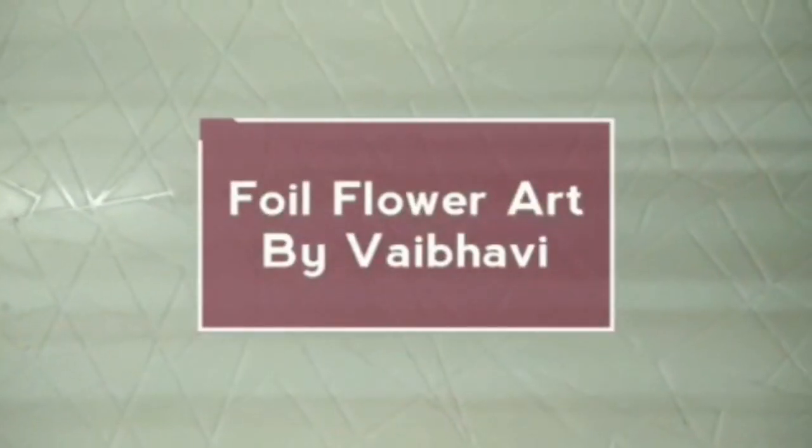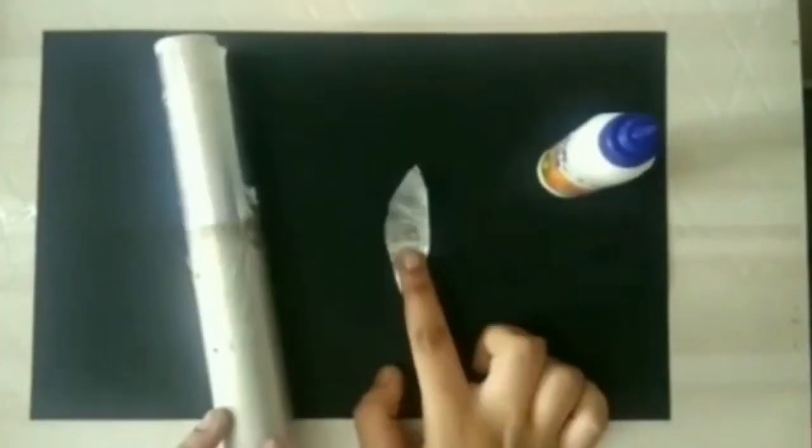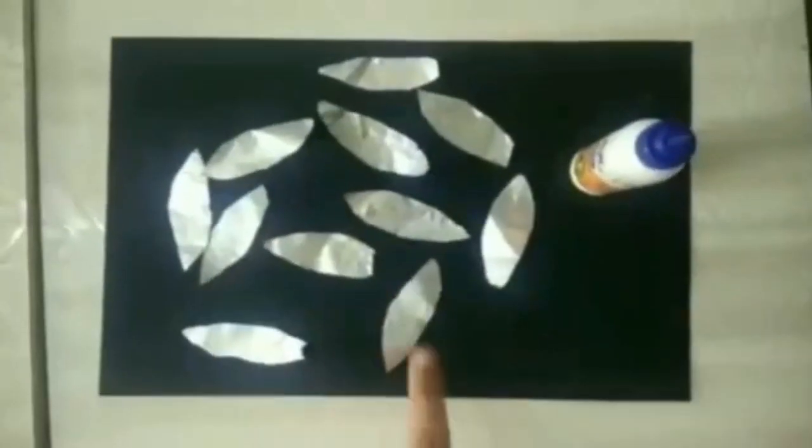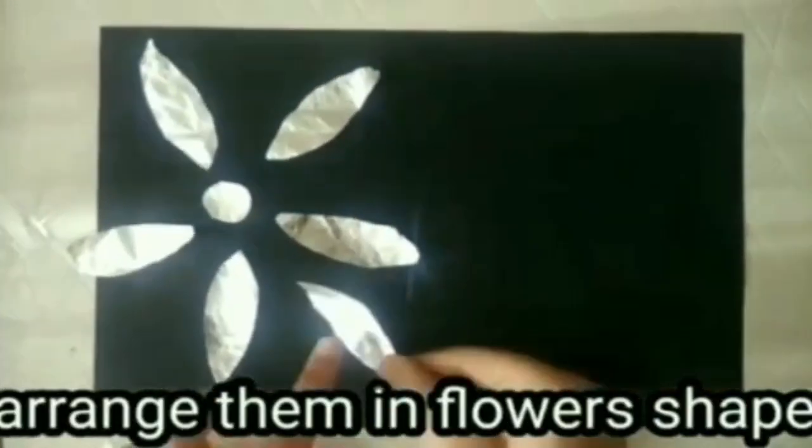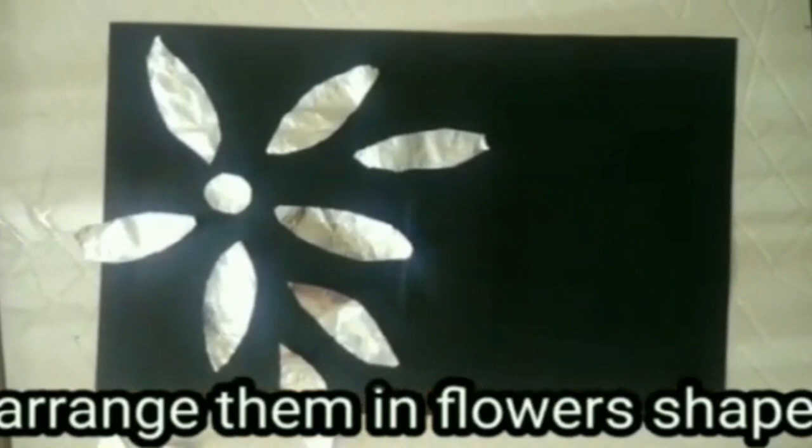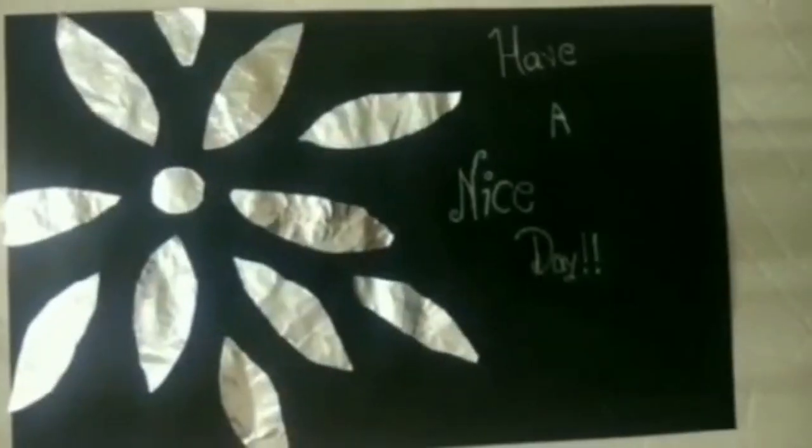Foil flower art by Vaibhavi. You need black paper, glue and foil. Make shapes of petals using foil and also a circle. Arrange them in a flower shape and glue it. Cut the extra paper. Our foil flower art is ready.